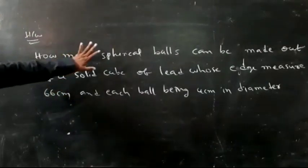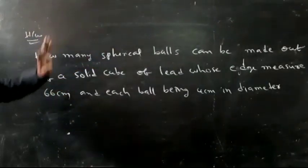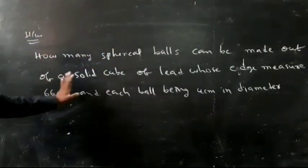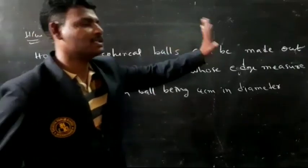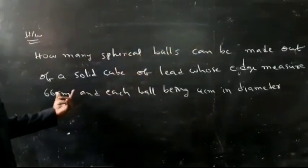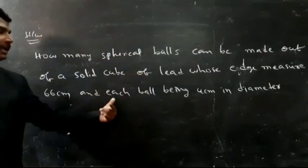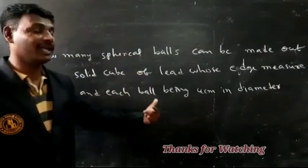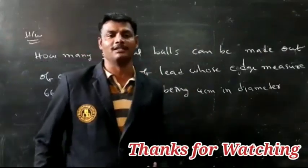Today's homework: how many spherical balls can be made out of a solid cube whose edge measures 66 centimeters, with each ball being 4 centimeters in diameter?